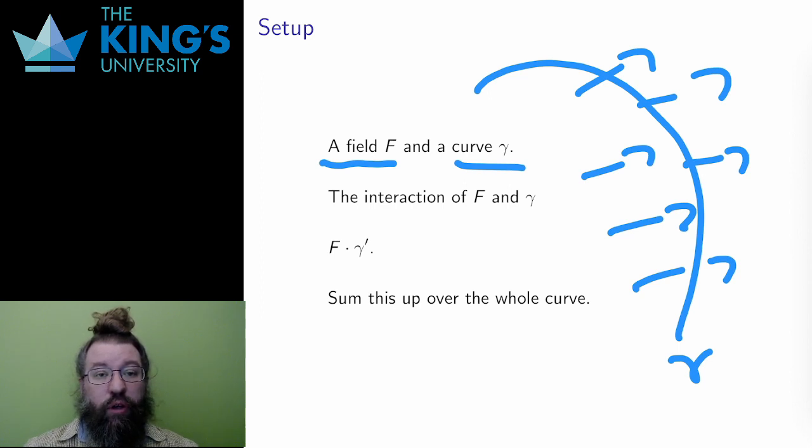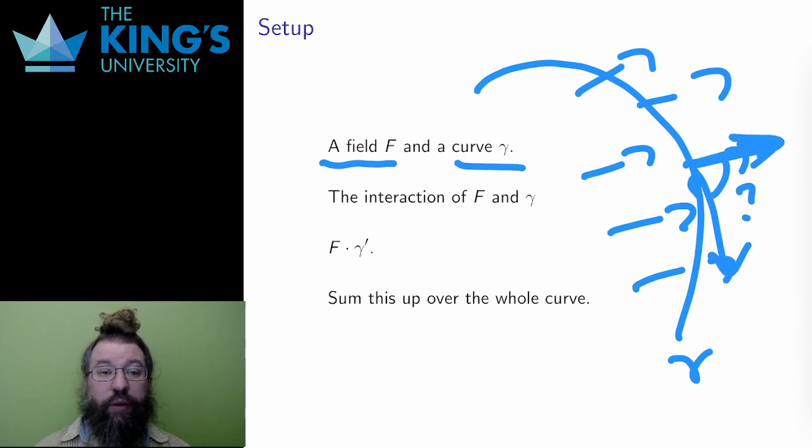An integral curve was defined to be the curve where the tangent vector and the vector field coincided. For another curve, the tangent vector and the vector field may not coincide, but they both exist and I can look at their interaction. I have a tool for this, the dot product.